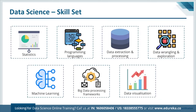Let's look at the skill sets a data scientist needs. It always starts with statistics — a good understanding of statistical tests, distributions, maximum likelihood estimators, probability theory, and descriptive statistics is very important. No matter what company you're interviewing at, you'll be expected to know a statistical programming language like R or Python, and a database querying language like SQL. The main reason people prefer R and Python is because of the number of packages these languages have — predefined packages with most algorithms already in them. So you can just load a package from their libraries and run it.